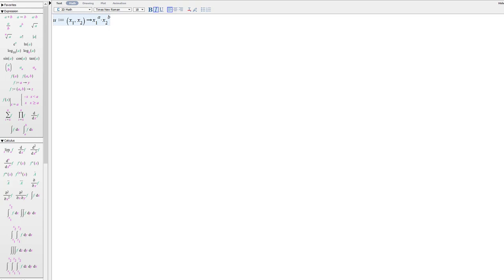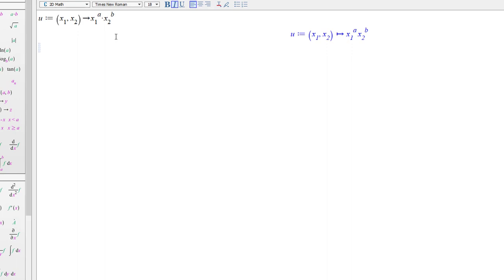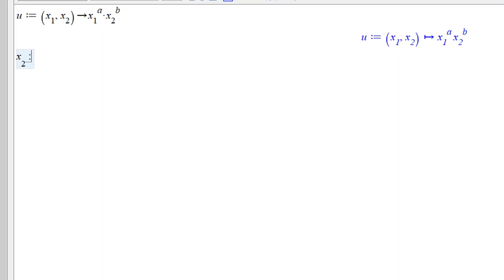So given a utility function x1 to the a times x2 to the b, my indifference curves will all be the graph of a power function. x2 will be a function of x1. And it will be given by some constant c, which is determined from the level of utility. Different values of c will give us different indifference curves multiplied by x1 raised to negative a over b.